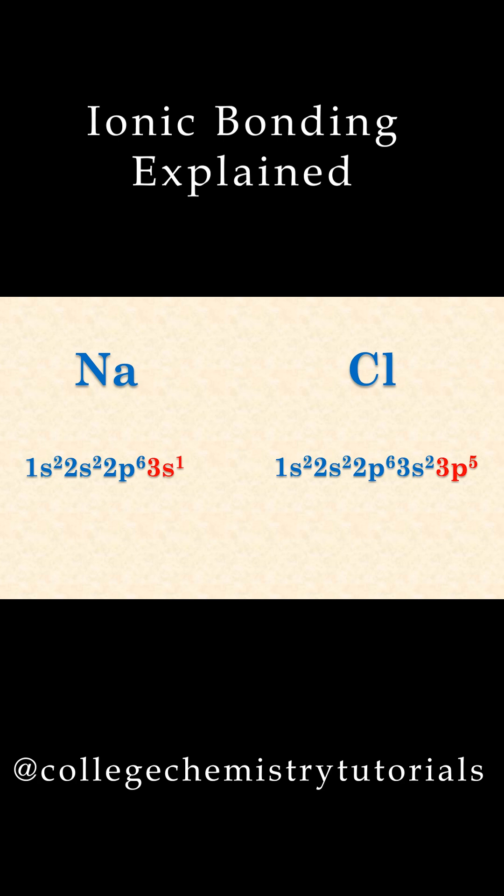The valence electrons are shown in red. The electronegativity difference between metals and nonmetals is very large, with chlorine being the more electronegative atom. This means that sodium will easily donate one electron to chlorine.